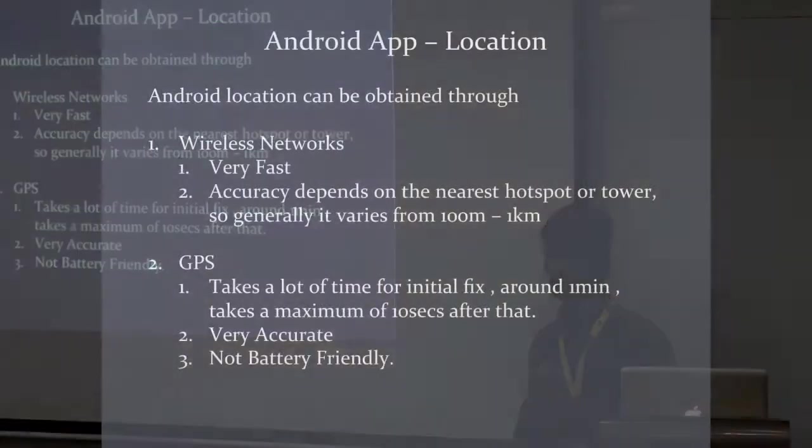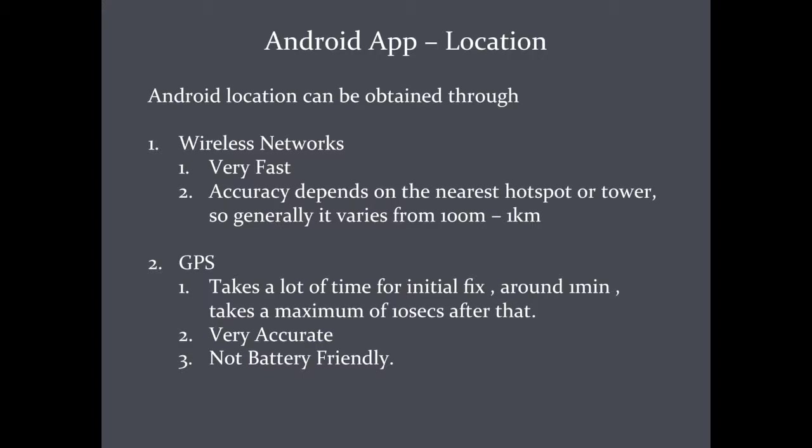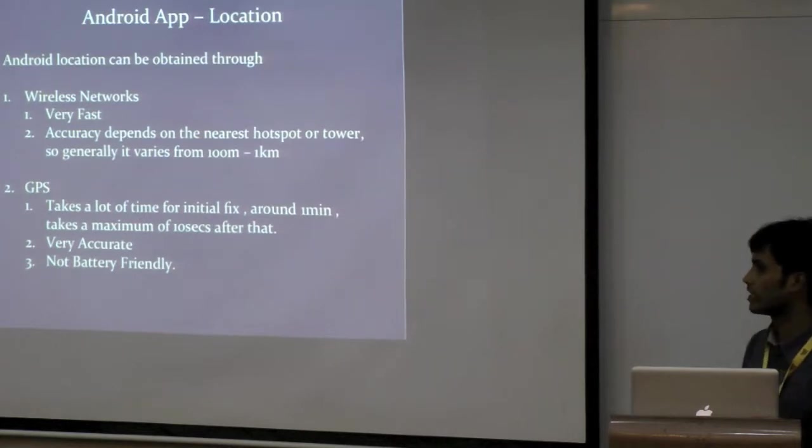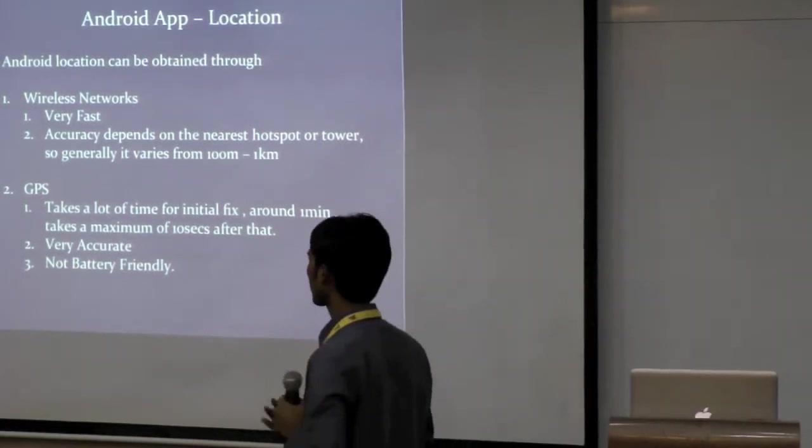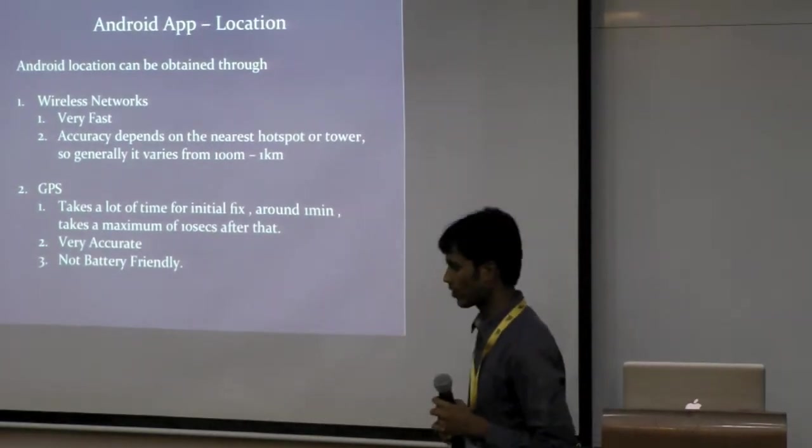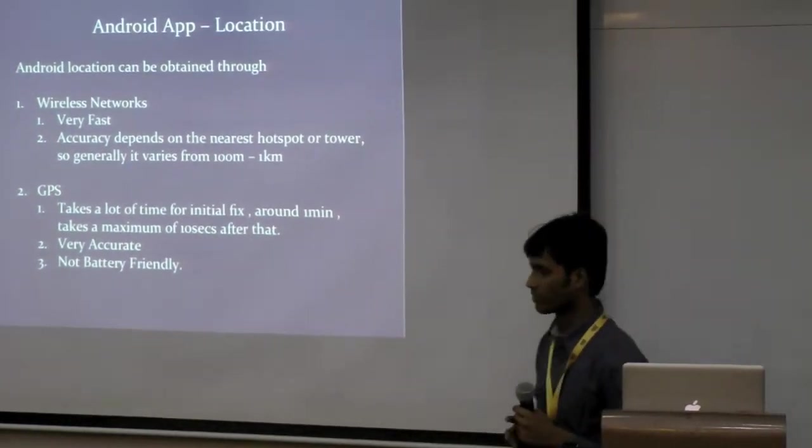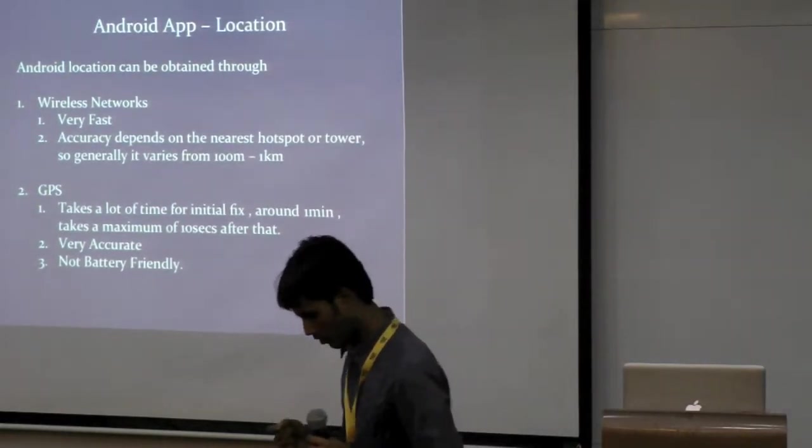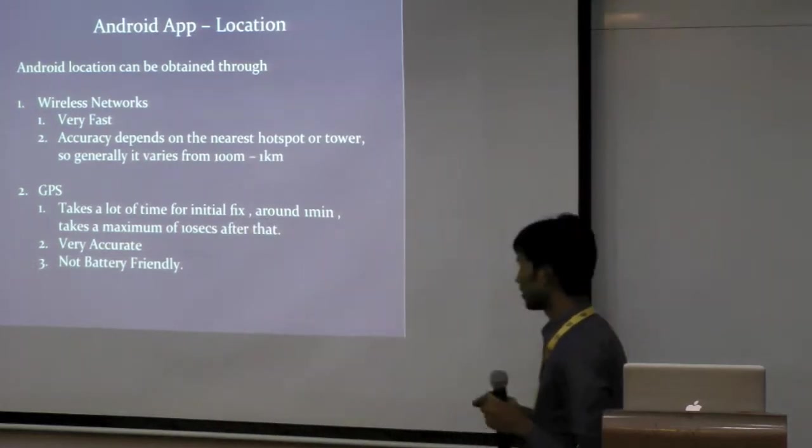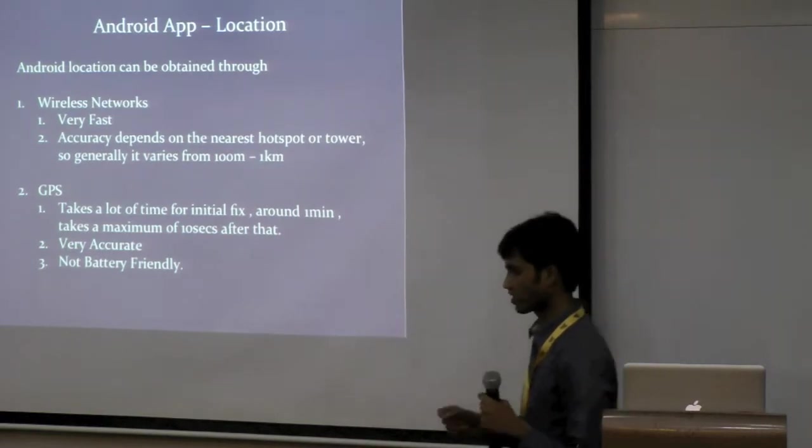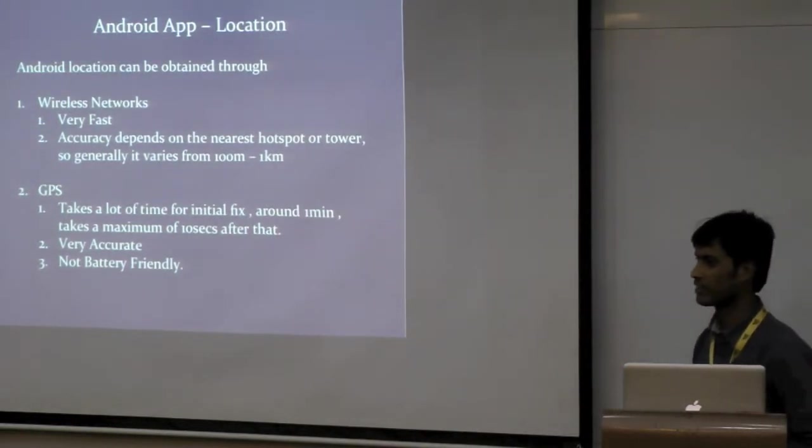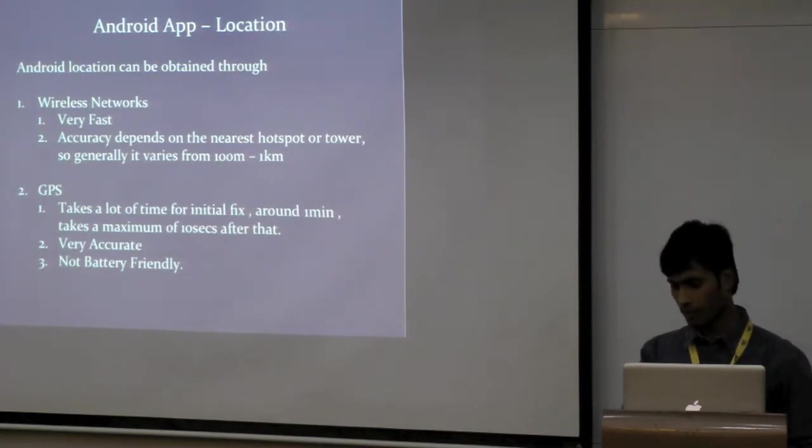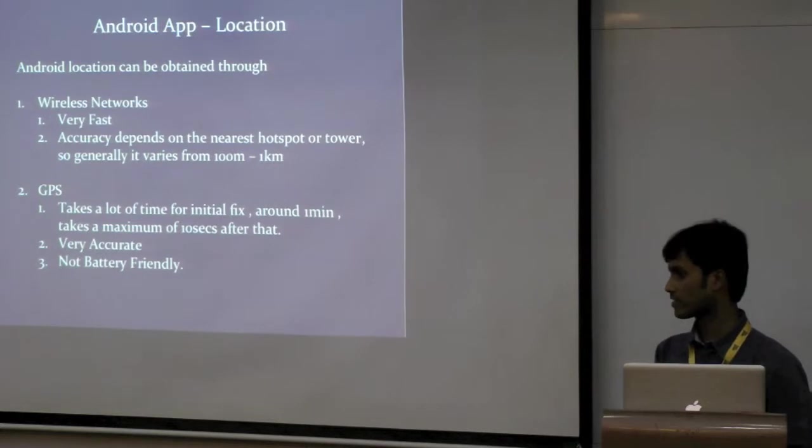I just wanted to say how the Android location is obtained. Because many people actually make some mistakes here. So, Android location is obtained through wireless networks and GPS. The processing counts of each are, wireless networks are very fast. And, accuracy depends upon the area cell tower or Wi-Fi hub. So, it basically varies from 100 km to 1 km. GPS takes a lot of time initially, but the first time for the initial fix. It's like maximum of 1 minute. And it takes a maximum of around 10 seconds to basically get a fix. And GPS is fairly accurate, but it's not battery-friendly if people don't want to have it.